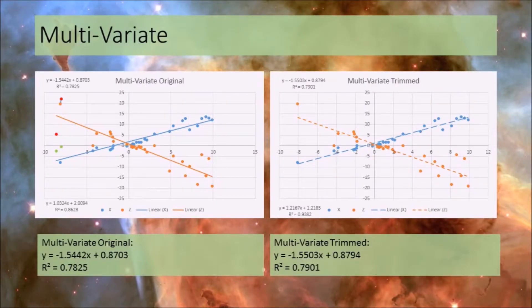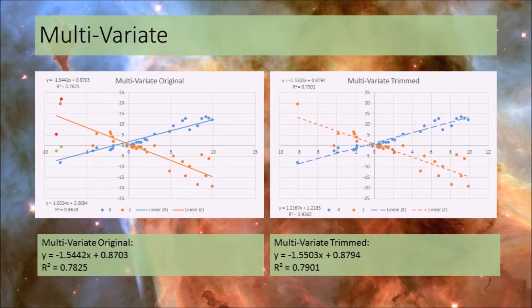This can be done with independent and dependent variables or with dependent variables and residuals. For the multivariate model — two independent variables, one dependent variable — we're going to trim two observations: the two red points associated with the orange Z variable, and the two green points associated with the X variable. These match on observations, so we're removing two rows from our dataset. Before removal, the beta coefficient is negative 1.5442 with an R-squared of 0.7825.